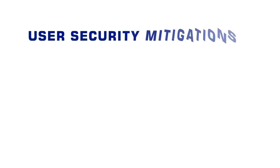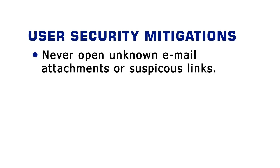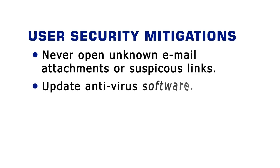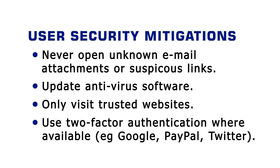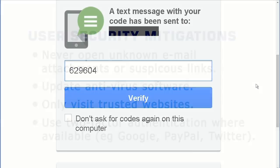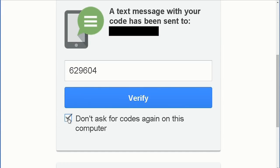Beyond installing software patches, we can all protect ourselves by changing our behavior. The Spectre and Meltdown flaws are only an issue if someone exploits those vulnerabilities, and we can take measures to stop that. We can use basic good security practice: don't open email attachments we don't recognize or trust, don't click untrusted links in emails, keep anti-virus software updated, and only visit trusted websites. Another thing we can do is use two-factor authentication on sites where it's available, so you need more than just a username and password.